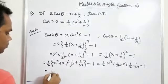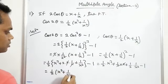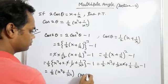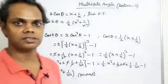So we get half into x square plus 1 by x square, proved. In the next video, we will discuss another sum.